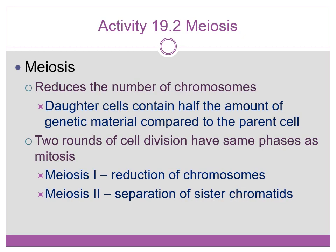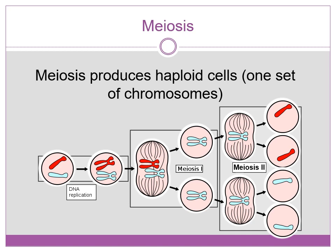Moving on to meiosis. Meiosis reduces the number of chromosomes so that the daughter cells have only half the genetic material — one chromosome from the homologous pair in each of the final daughter cells. There are two rounds. Meiosis one reduces the chromosomes, while meiosis two separates the sister chromatids. In meiosis, we start off with a diploid cell but end up with haploid cells that have half the number of chromosomes as the diploid cell.